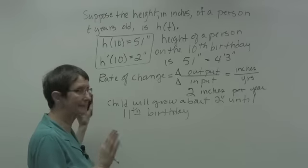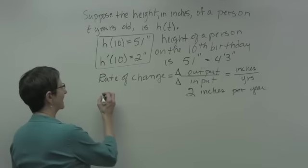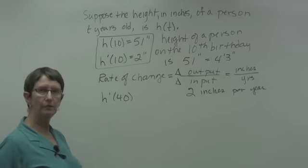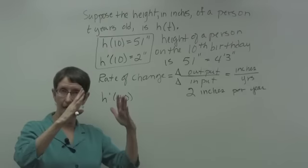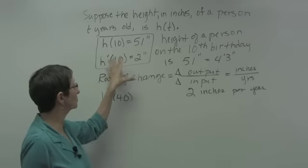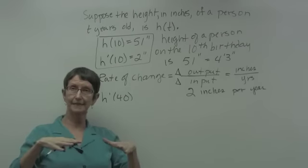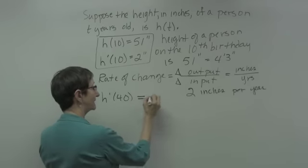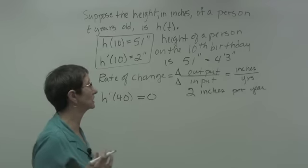Let's guess about h prime of 40. By age 40, people are usually no longer growing in height and not yet shrinking, so the derivative — the rate of change — at age 40 would be zero: zero inches per year.